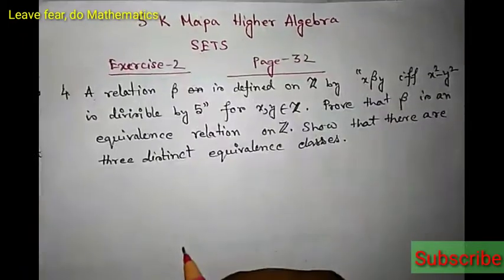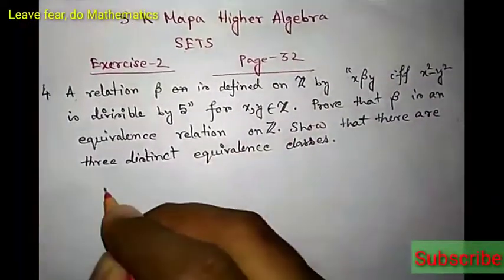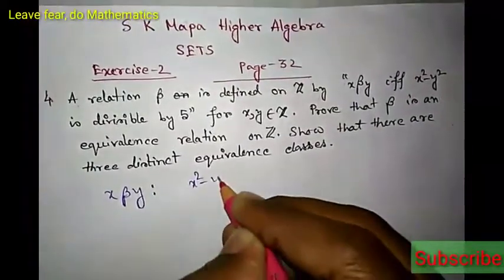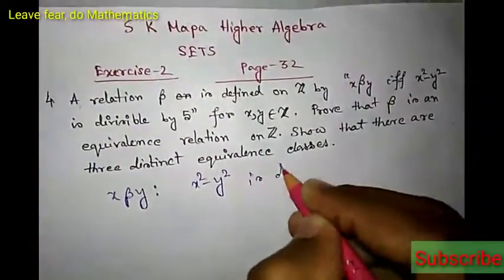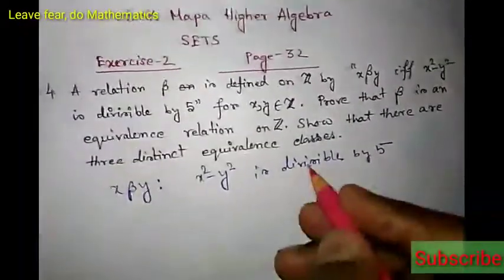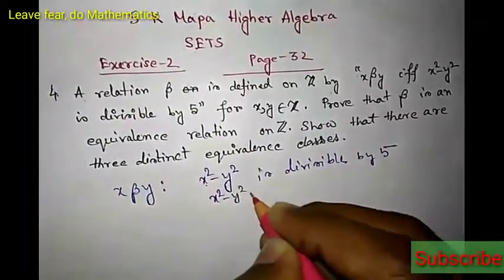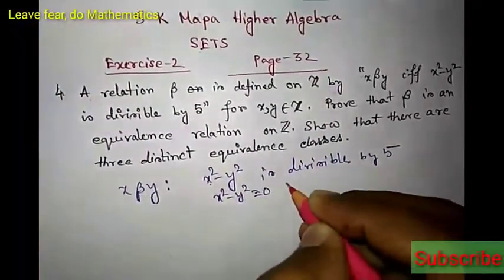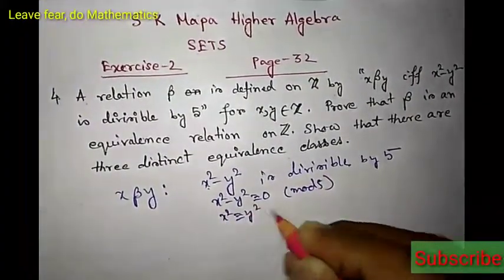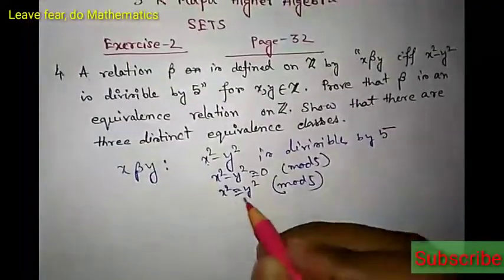This is a very interesting problem and we are going to give you a very easy and interesting solution. So x beta y, that is x is related to y, means x squared minus y squared is divisible by 5. This can be reformulated: x squared minus y squared is divisible by 5 means x squared minus y squared is congruent to 0 mod 5, which can be written as x squared is congruent to y squared mod 5.